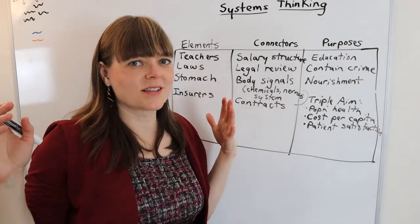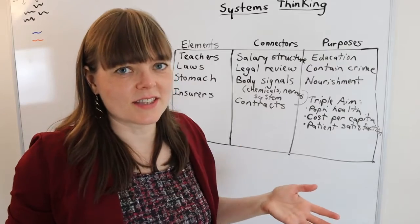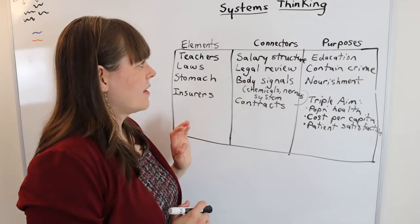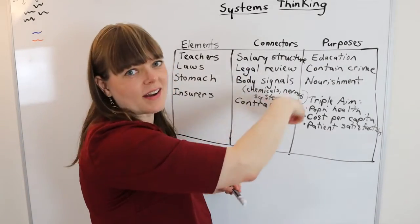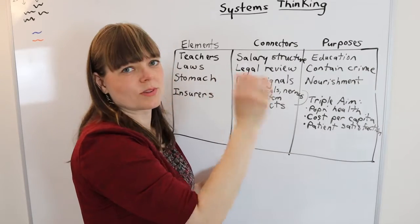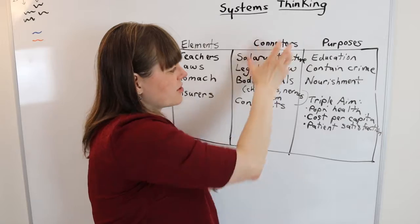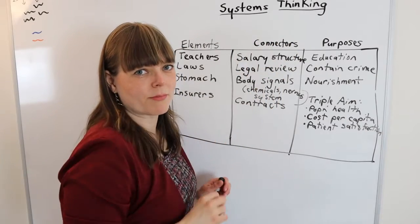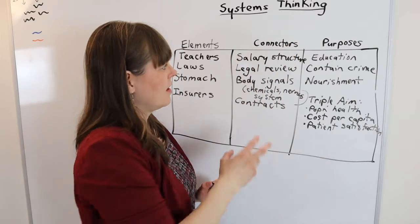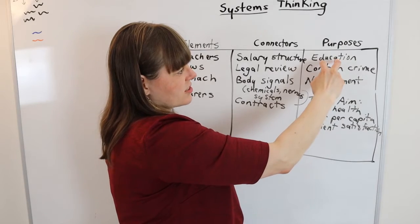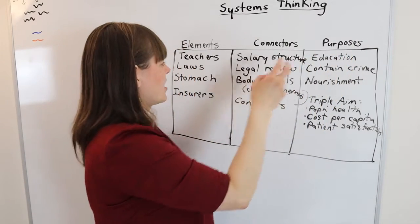My first question was, where are the incentives in this framework? The incentives are really the connectors. They're what creates relationships between the parts. The incentives are basically what creates dynamic movement within the system. And the purpose of an education system or school system might be education.